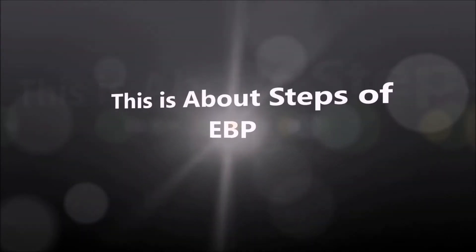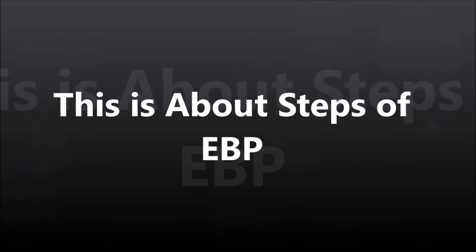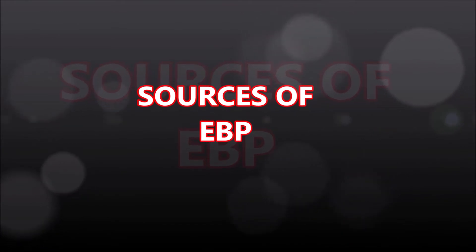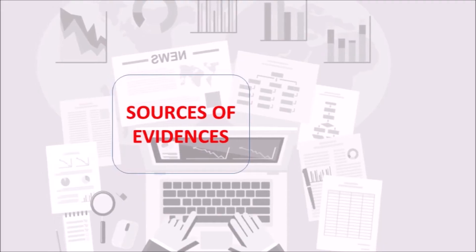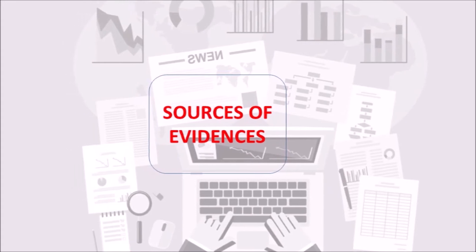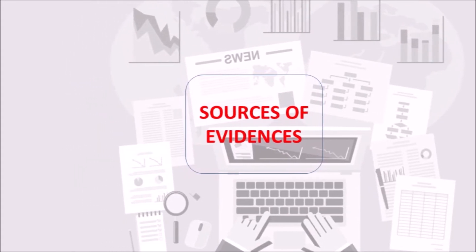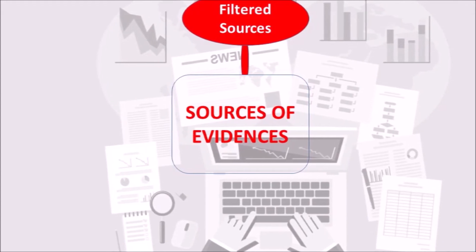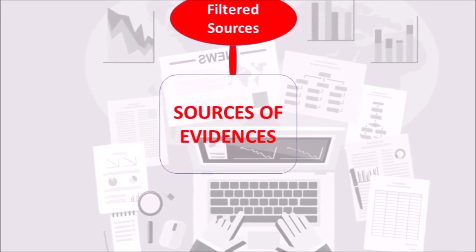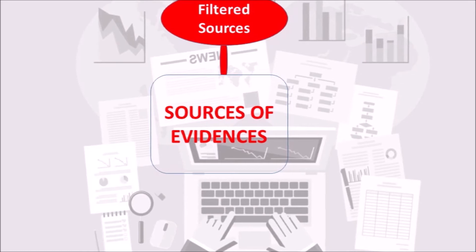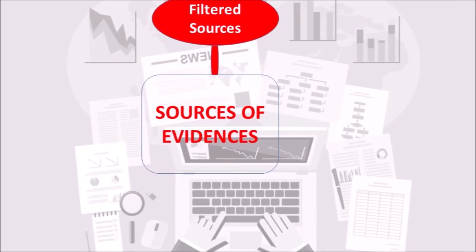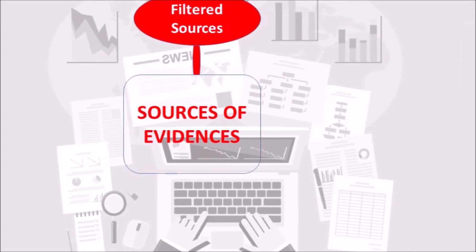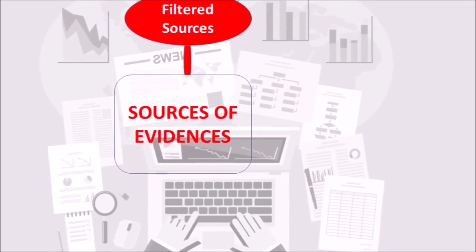Friends, this is about the steps of evidence-based practice. I hope you understood the steps of evidence-based practice. Next, we will discuss sources of EBP. The sources of evidence are categorized into the following headings. The first is filtered resources — clinical experts and subject specialists pose a question and then synthesize evidence to state a conclusion based on available research. These sources are helpful because the literature has been searched and results were evaluated to provide an answer to a clinical question.